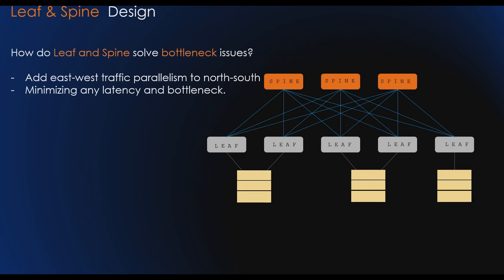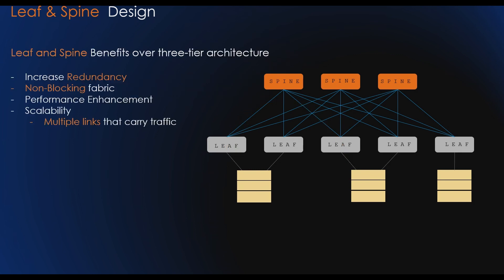From the Clos topology, the leaf and spine architecture has been designed. Spine-leaf architecture adds east-west traffic parallelism to the network backbone, fundamentally solving the bottleneck problems of the traditional three-tier architecture. Compared to three-tier, spine-leaf provides connections through the spine with a single hop between leaves, minimizing latency and bottlenecks, while each leaf connecting to multiple spines creates a large non-blocking fabric.